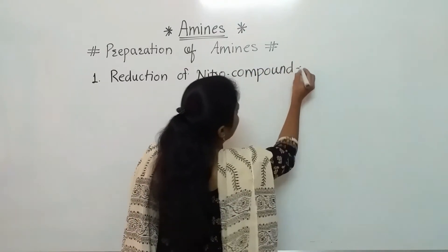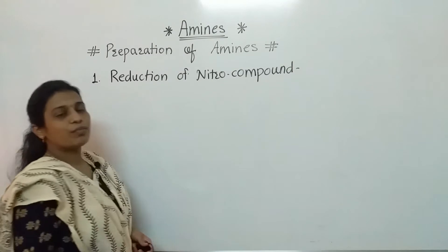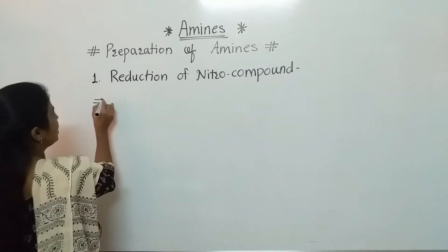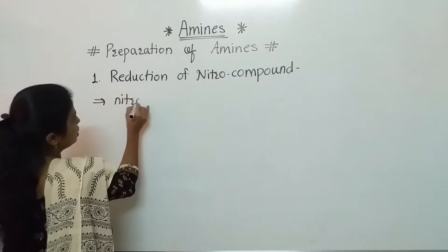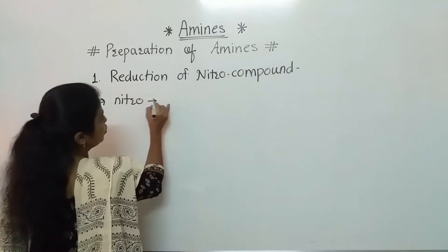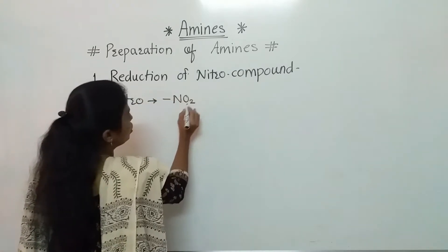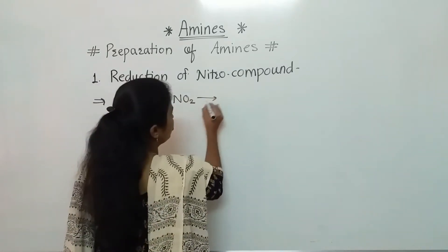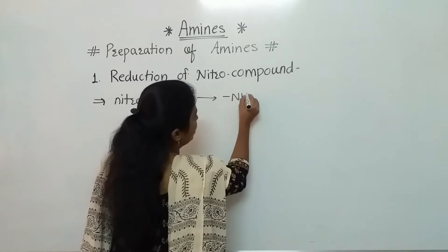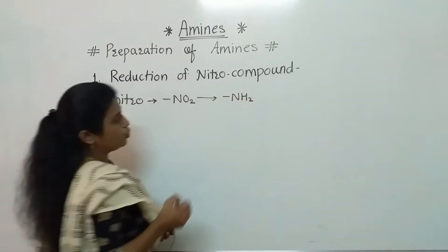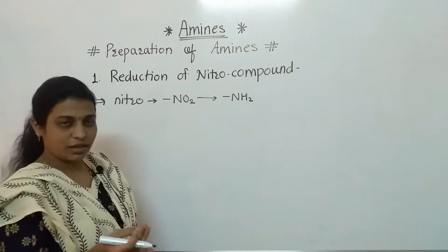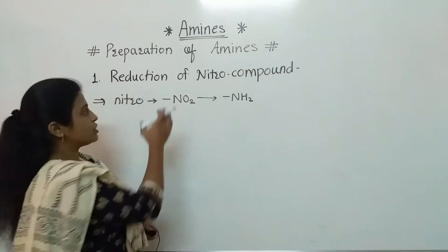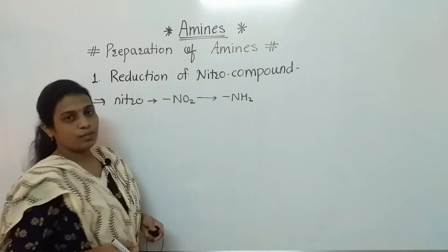First we will discuss nitro compounds — what is the structure of the nitro group. In nitro compounds, as we know, there is the NO2 group. On reduction of NO2, it gets converted into the NH2 group. How that reduction takes place, that we are going to discuss in this point.